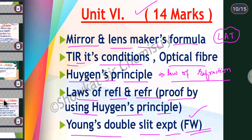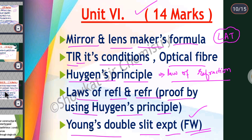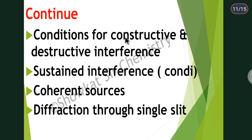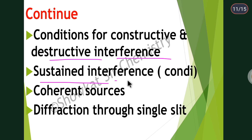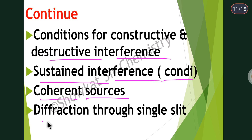More questions from Unit 6 will cover conditions for constructive and destructive interference, what is sustained interference and its conditions, coherent sources, and diffraction through a single slit.